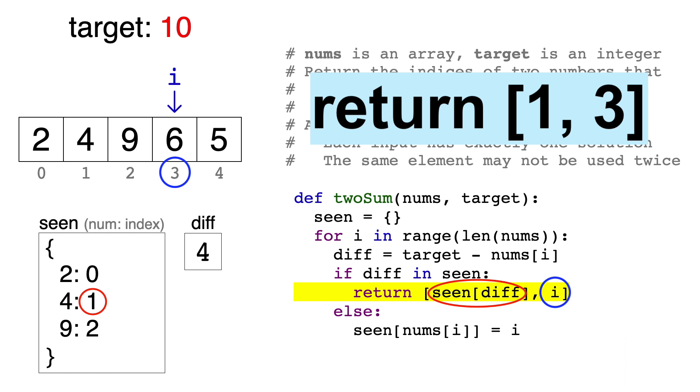In the worst case, this algorithm will only have to traverse the array once, so it runs in O(n).